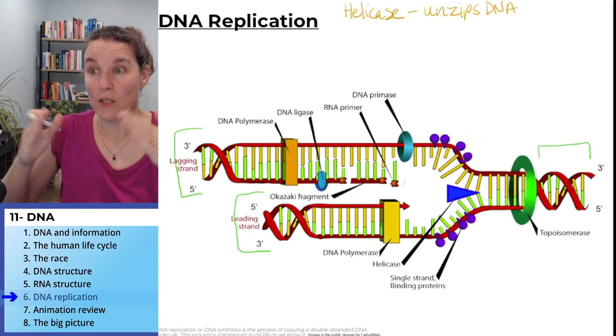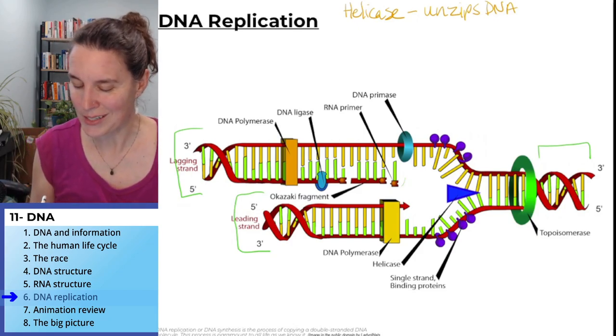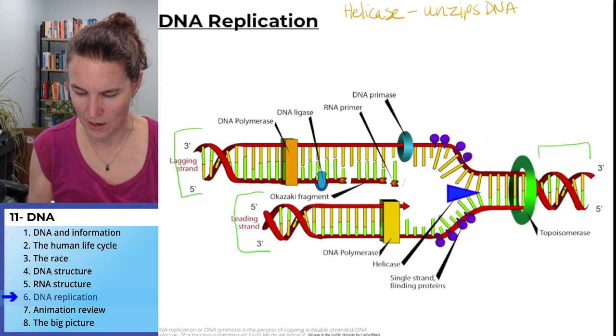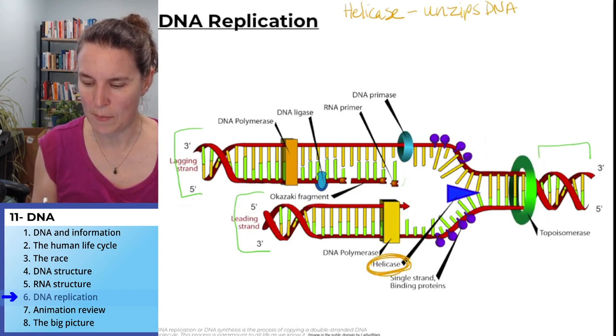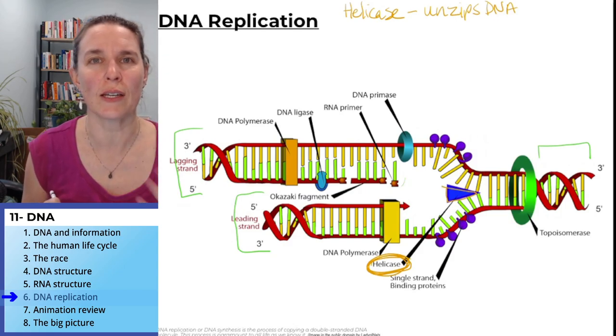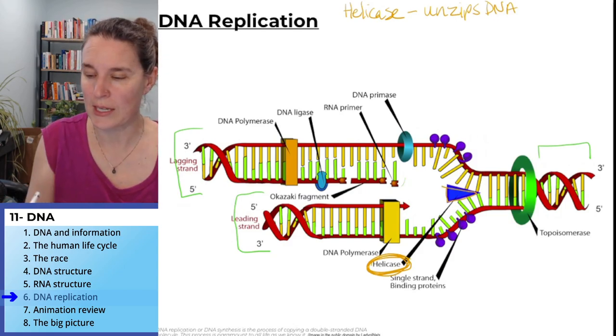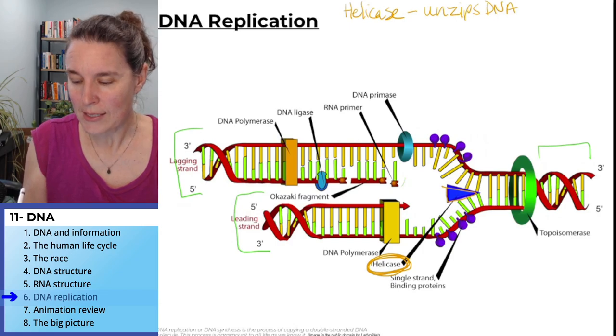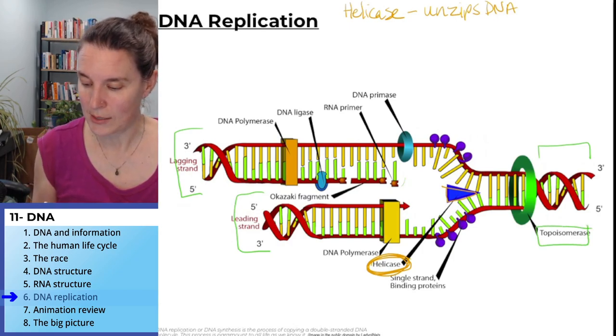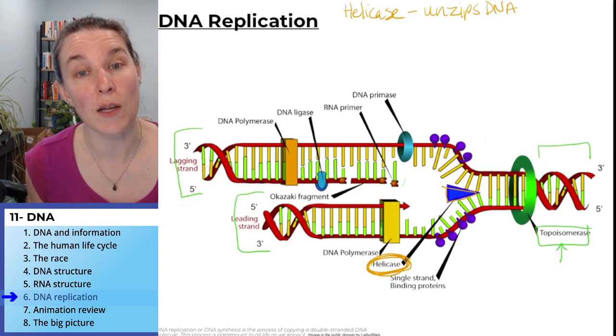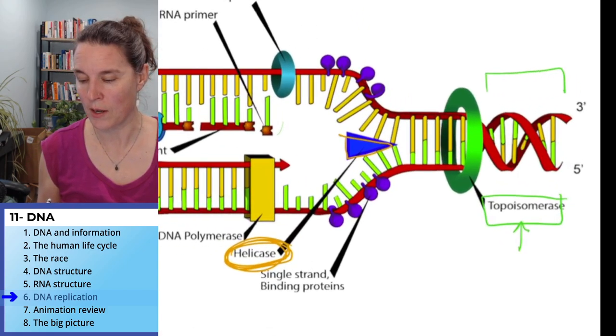So helicase goes in and does that work. Yeah, there's another guy. Now helicase is there. Helicase is being shown by this like triangle in our diagram, unzipping the DNA. At the same time, we have a buddy named topoisomerase. Well, I guess I'm not going to write topoisomerase for you. Can you see that well enough?